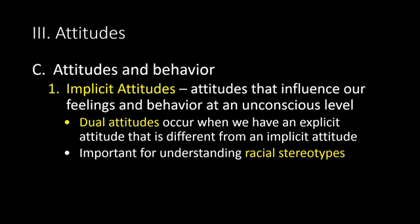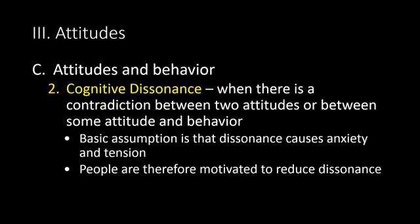Implicit attitudes are attitudes that influence our feelings and behavior at an unconscious level. Dual attitudes occur when we have an explicit attitude that is different from an implicit attitude, and this is particularly important for understanding racial stereotypes — because we are often not fully consciously aware of our associations with people of other races, or even our own race. This is why psychologists developed the Implicit Attitudes Test, or IAT, which is supposed to determine whether or not you have automatic associations of which you are not conscious.